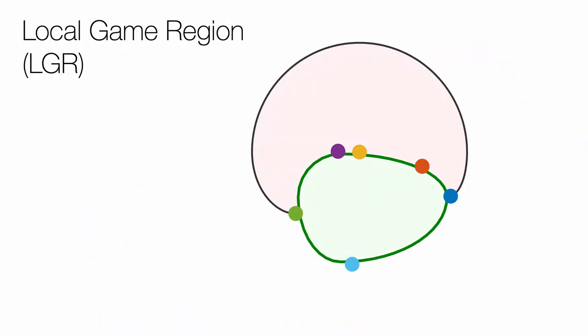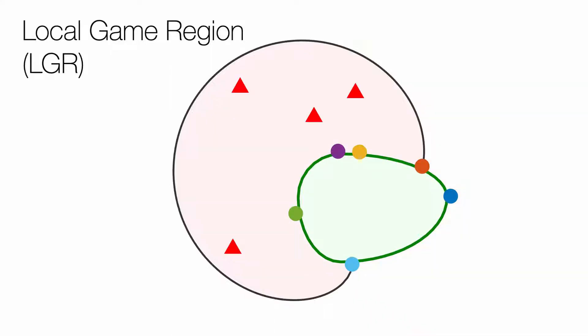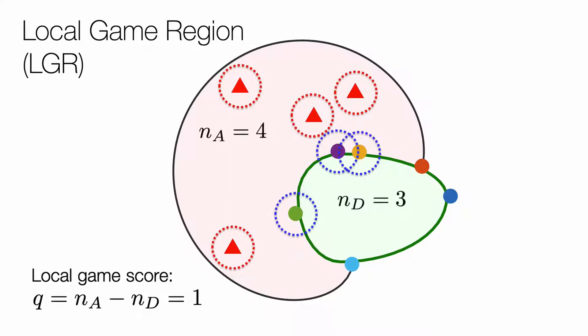We decompose the game into local game regions defined by the choices of defender pairs. For each region, we can count the number of defenders and intruders, and define the difference to be the local game score.